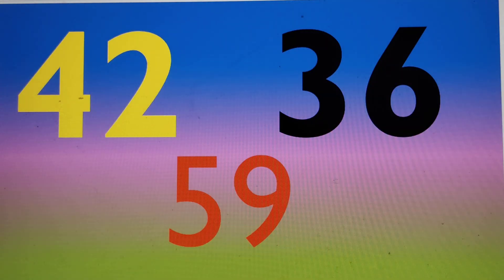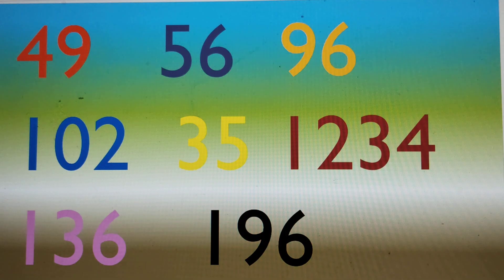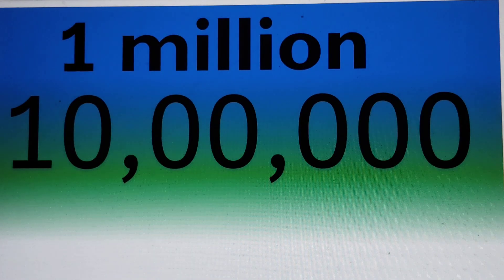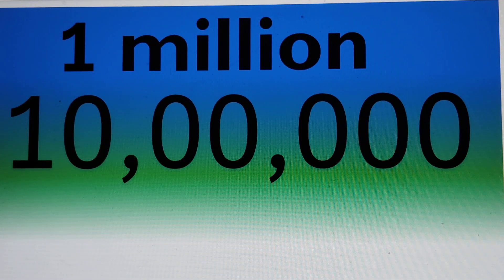What is the number in red? 59. The number in black? 36. Can you guess the number in blue? 102. Wow, great. Can you guess the number in black? 1,000,000. This is 1,000,000.